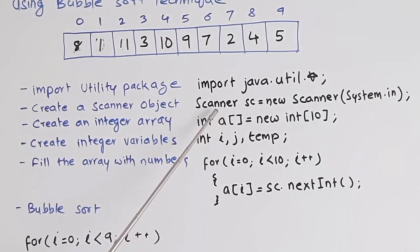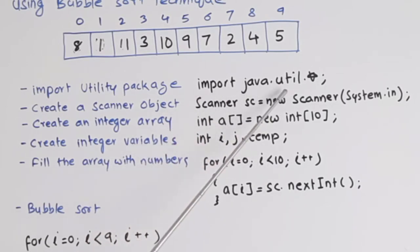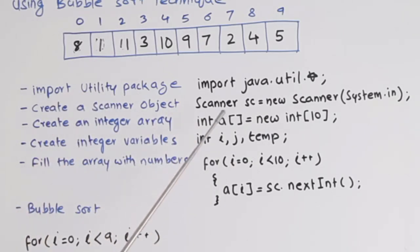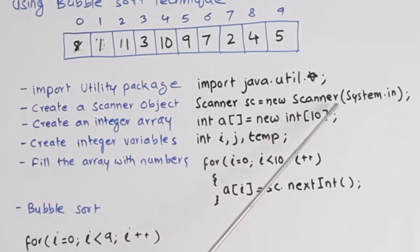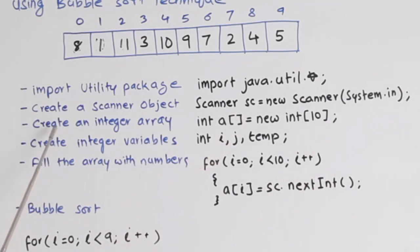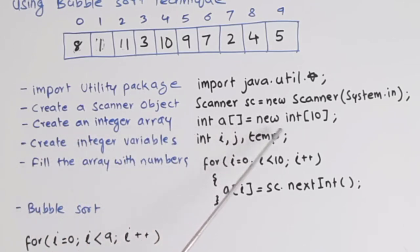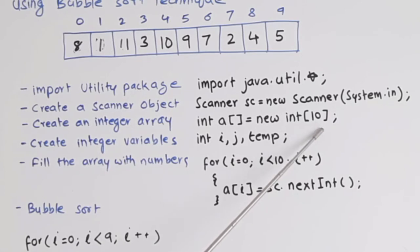We are going to use the Scanner class, which is part of the utility package. Therefore, you need to import the utility package first with 'import java.util.*'. Then we create a Scanner object: 'Scanner sc = new Scanner(System.in)'. After that, we create an integer array: 'int a[] = new int[10]'. A is the name of our integer array which will contain 10 elements.